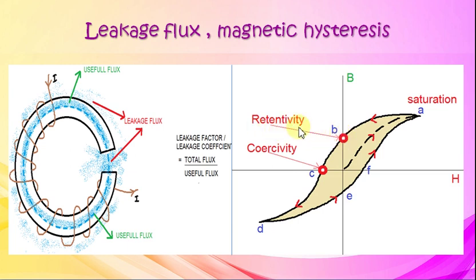If we reverse the current further, magnetic strength will reverse and at last flux become zero. The H required to reduce the B of the sample to zero is called the coercive field.